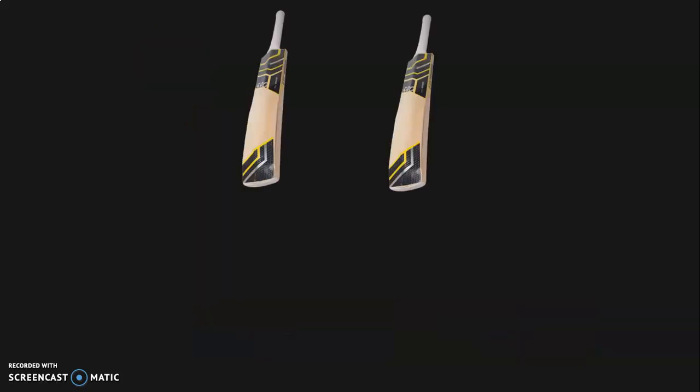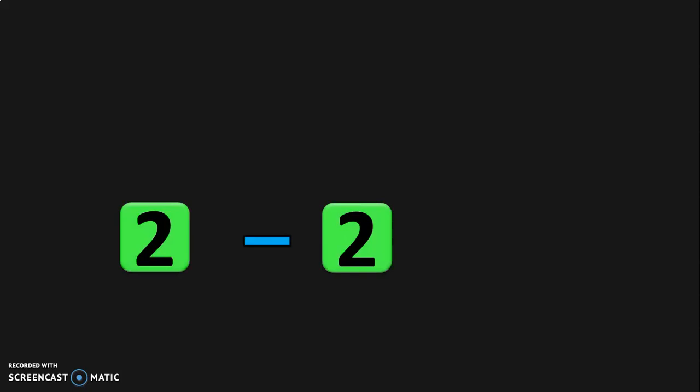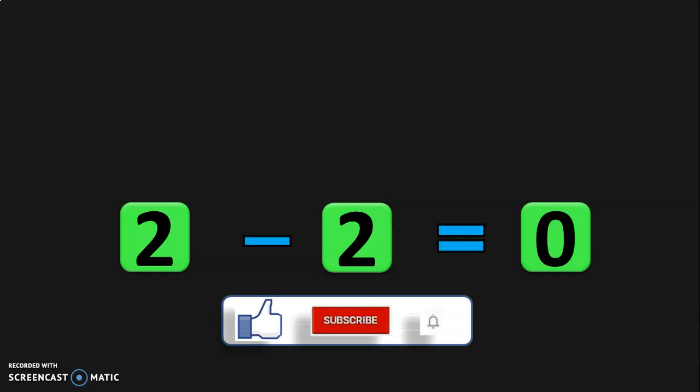You had 2 cricket bats with you. You accidentally broke both the bats. So how many cricket bats do you have with you now? Empty or 0. So 2 bats were there with you. You broke both the bats. So what is the answer now? Now you have 0 bats with you or you have no bats with you. 2 minus 2 is equal to 0.